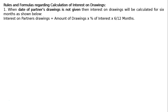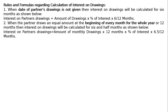The second rule: when the partner draws an equal amount at the beginning of every month for the whole year or 12 months, then interest on drawings will be calculated for 6 and half months. Interest on partner's drawings equals amount of monthly drawings multiplied by 12 months multiplied by percentage of interest multiplied by 6.5 upon 12 months.